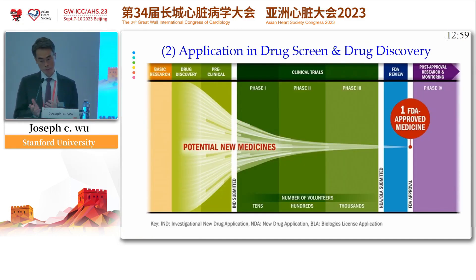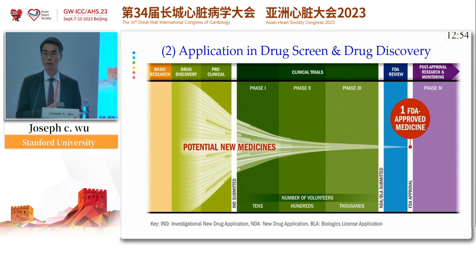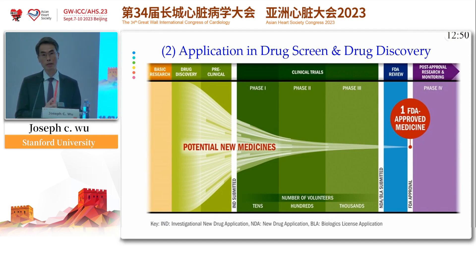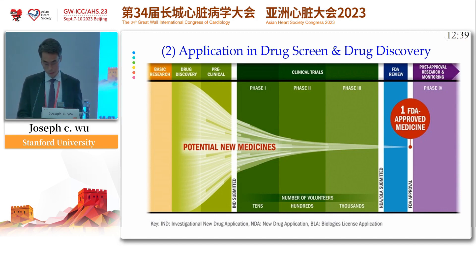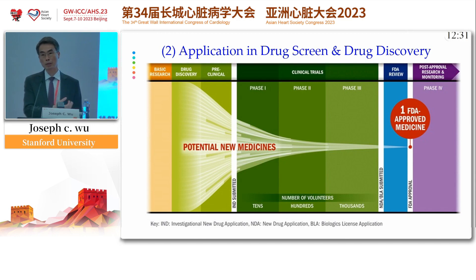I want to shift to the second part of my talk, which is how we use this technology for drug screening and drug development. This slide here shows the difficulty of developing a drug. Essentially, it'll take you about 10 to 15 years to develop a drug from R&D to clinical improvement. It costs a lot of money — on average $1 to $2 billion. And this is the reason why drugs are very expensive, because companies that fail on previous drugs need to recuperate some of those costs.